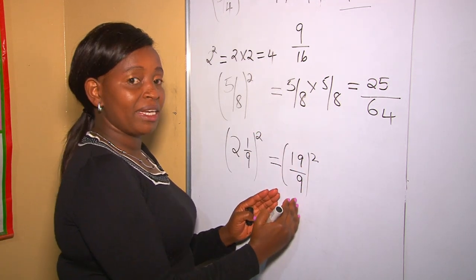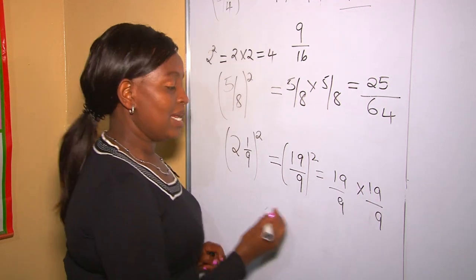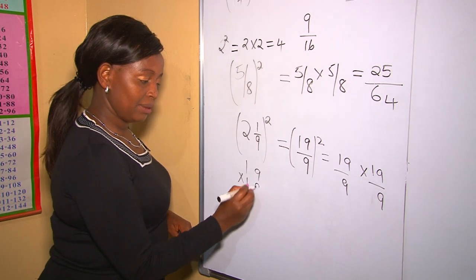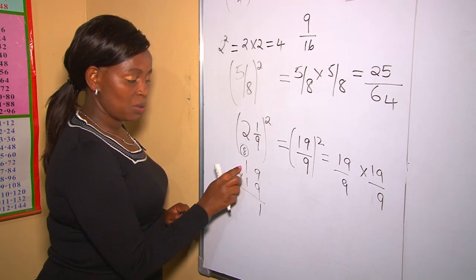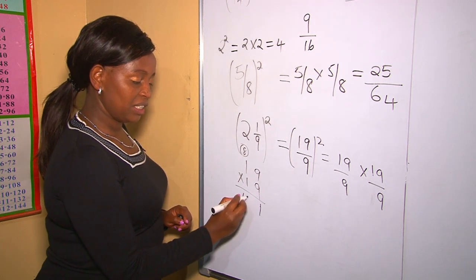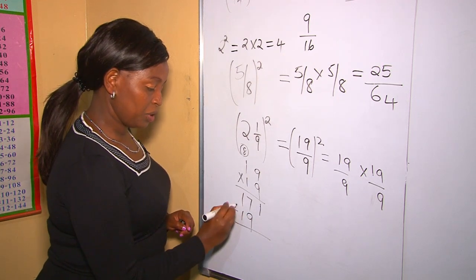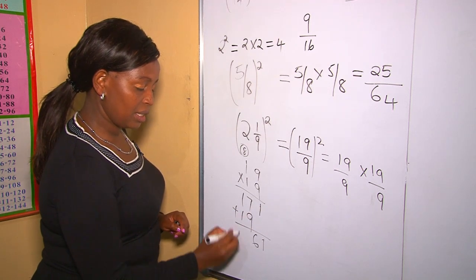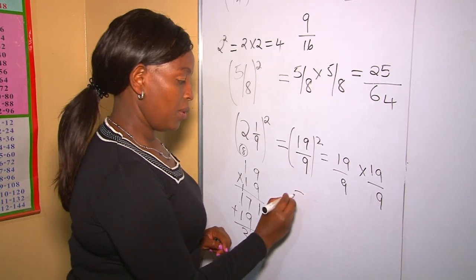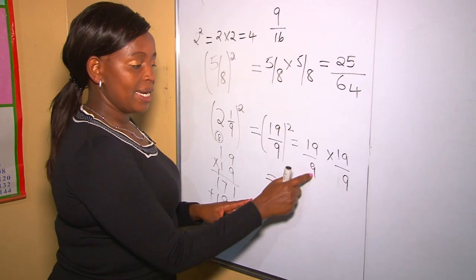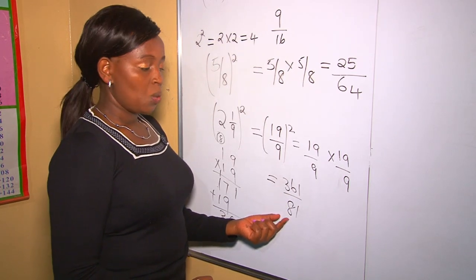After changing to an improper fraction, now we can square. To square means multiplying the number by itself, so it is 19 over 9 multiplied by 19 over 9. Let's multiply: 19 times 19. We calculate — 9 times 9 is 81, then 9 times 1 is 9 plus 8 is 17. Then 1 times 9 is 9, and 1 times 1 is 1. Putting them together: 7 plus 9 is 16, carry 1, giving 361. So 19 times 19 is 361.